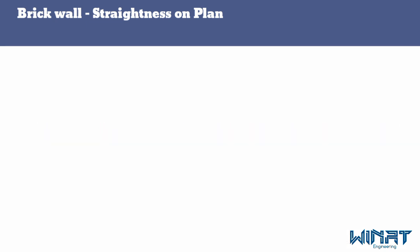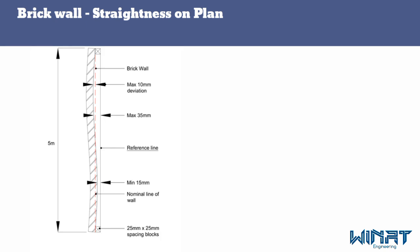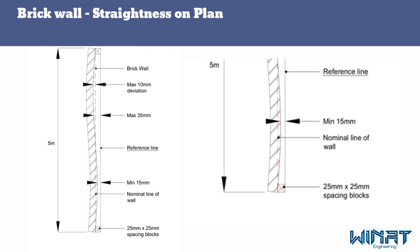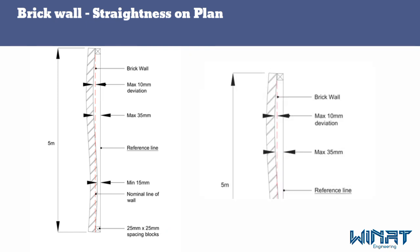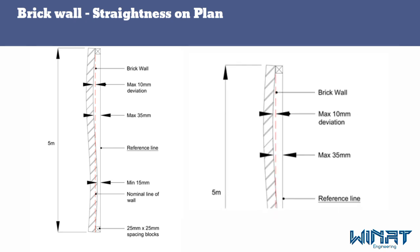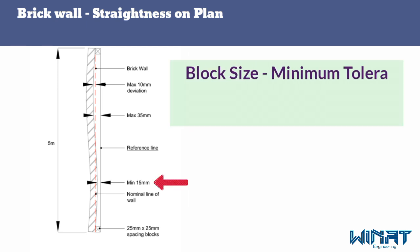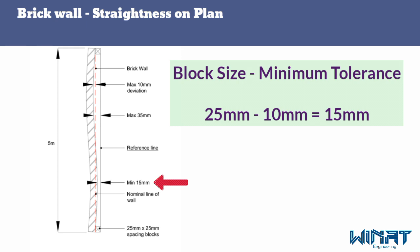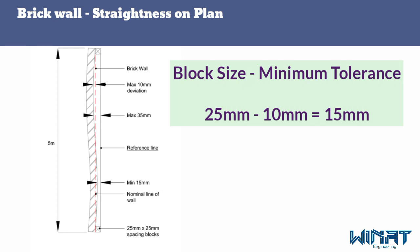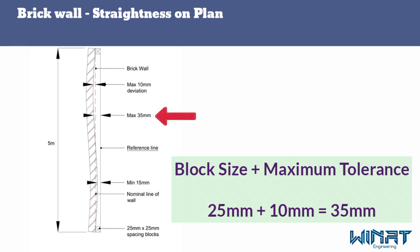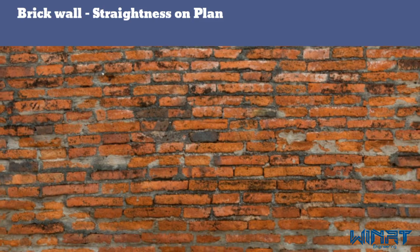For a test example: after brickwork completion, you need to set out a reference line using 25-millimeter wide blocks, then measure the distance between the masonry line and the reference line. The distance should be between 15 millimeters and 35 millimeters. The minimum acceptable deviation is 15 millimeters (25mm minus 10mm tolerance) and the maximum acceptable deviation is 35 millimeters (25mm plus 10mm tolerance). Note that spacing block sizes are a guide only and vary from site to site.